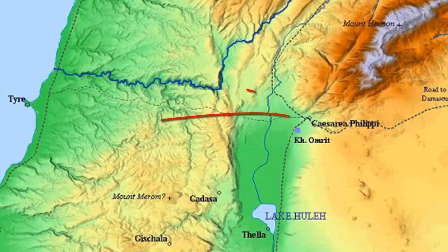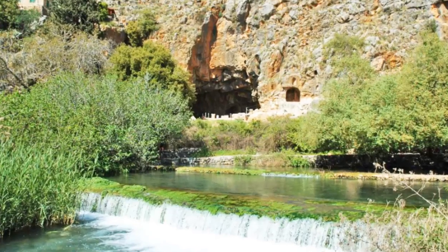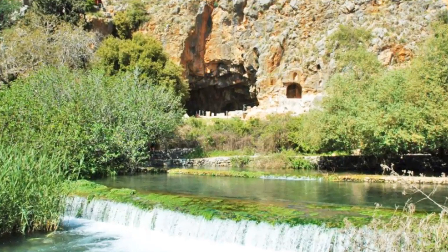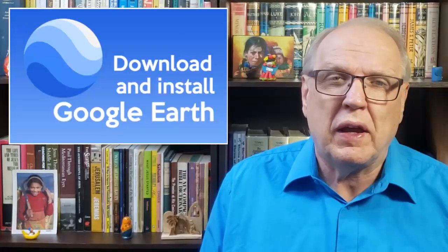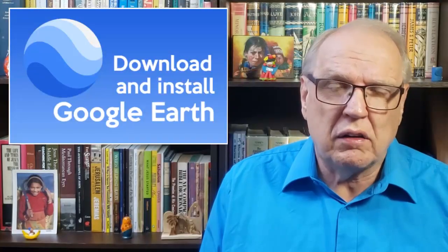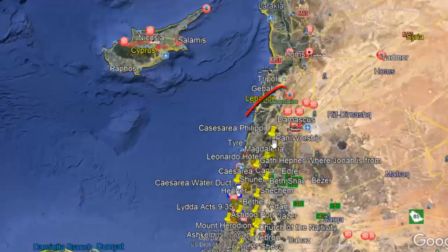Caesarea Philippi is found between the Lake of Galilee and Mount Hermon, northeast of the Lake of Galilee. Let me show you how to find it with Google Earth. By the way, you can download that application for free — it's well worth it.